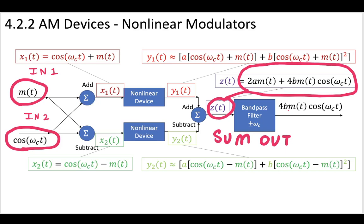Now, we had two inputs here. We had our input one, the message, and we had our input two, which is a cosine with a carrier frequency omega c.